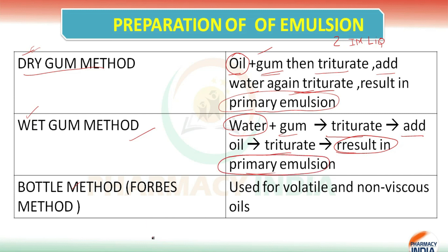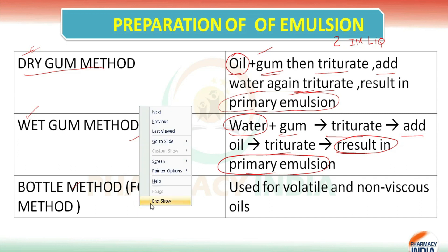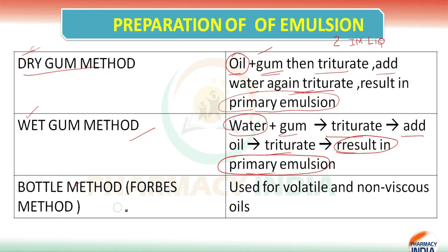The third and last method is the bottle method, also known as Forbes method. Students, this method is frequently asked in competitive exams, so please note it down. This method is used for volatile and non-viscous oils.